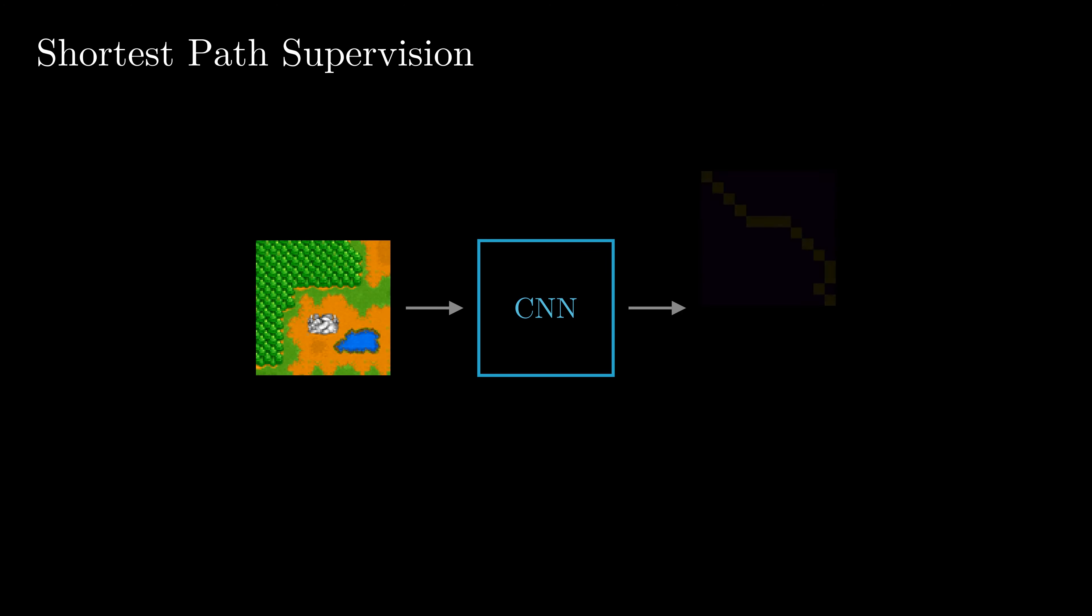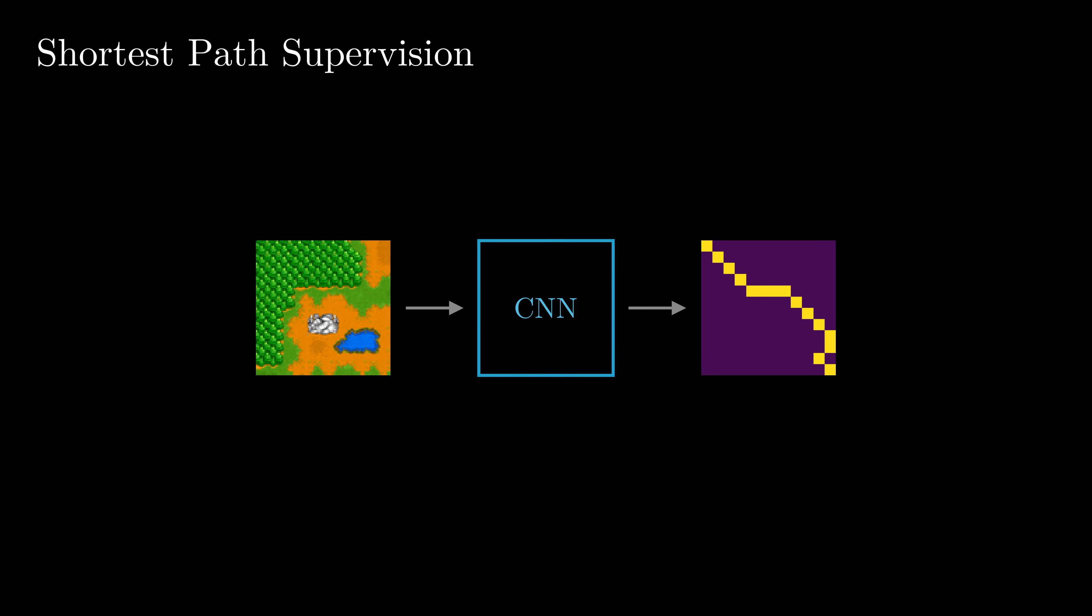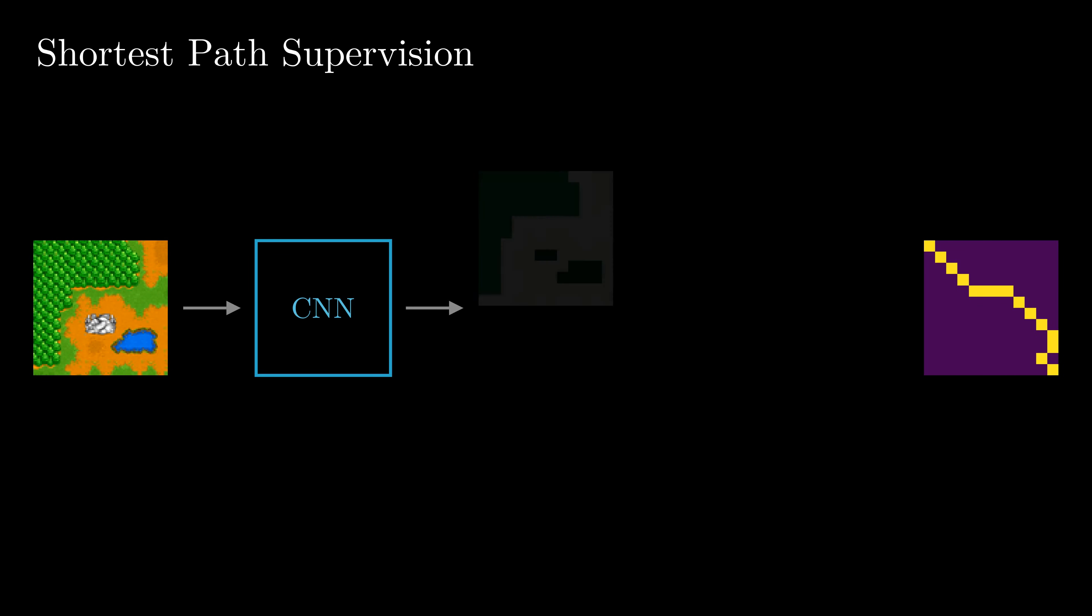Our second experiment is the shortest path supervision. Here, we are given an image of a Warcraft terrain map, and the goal is to produce the shortest path, which can be done via a CNN. To improve the architecture and make it interpretable, we use the CNN only to build cost embeddings, and use a differentiable relaxation of the Bellman-Ford shortest path algorithm to generate the shortest path for the cost embeddings.